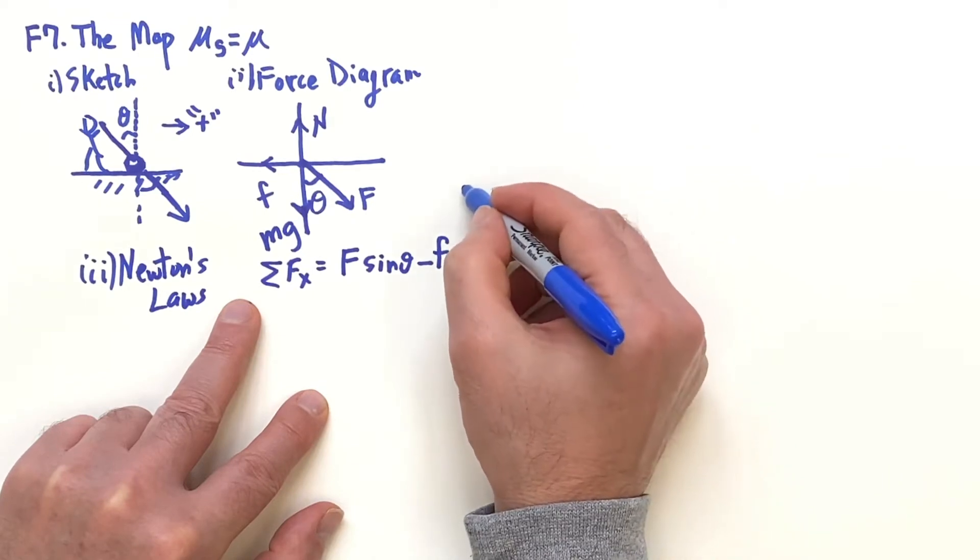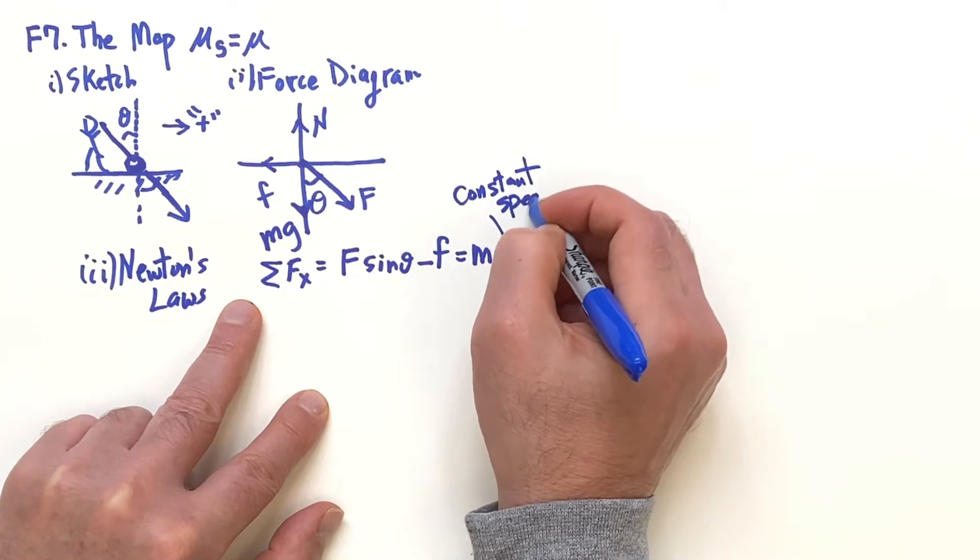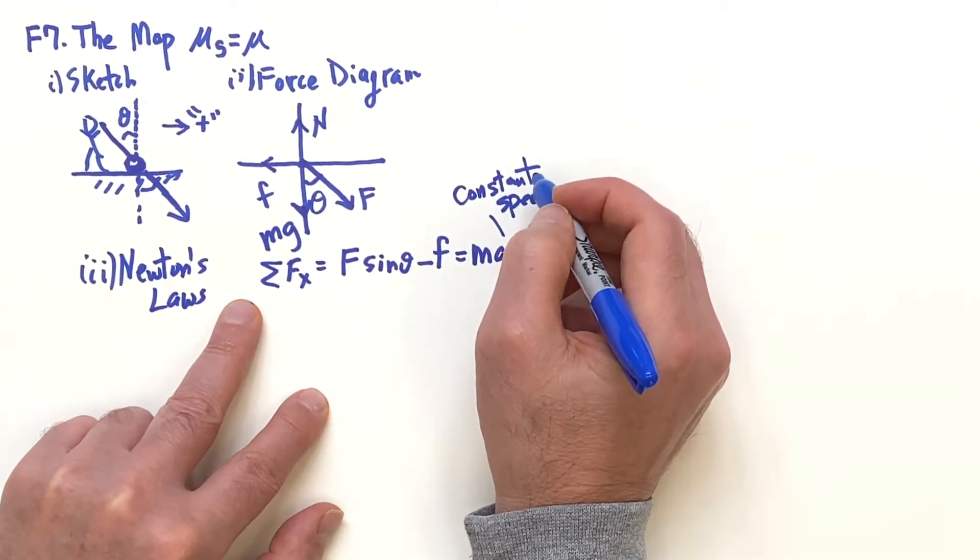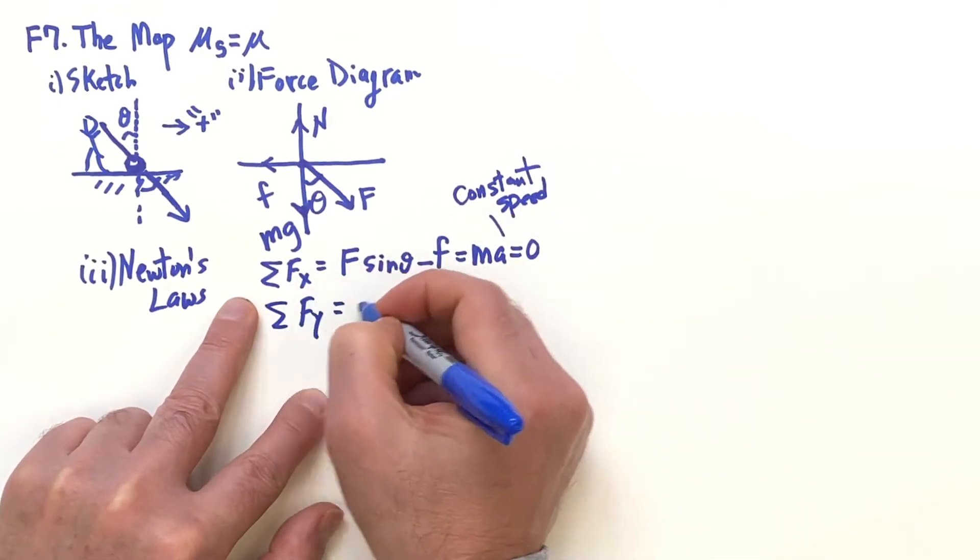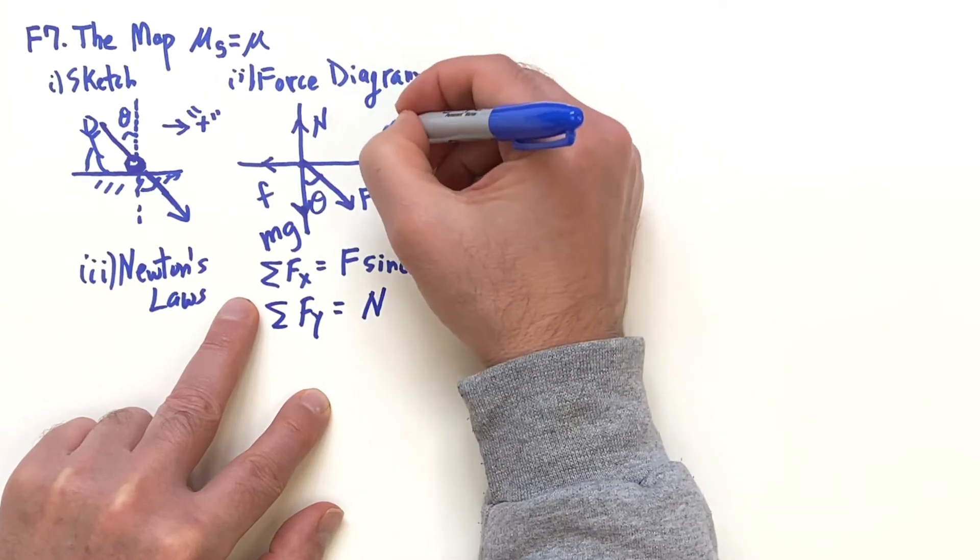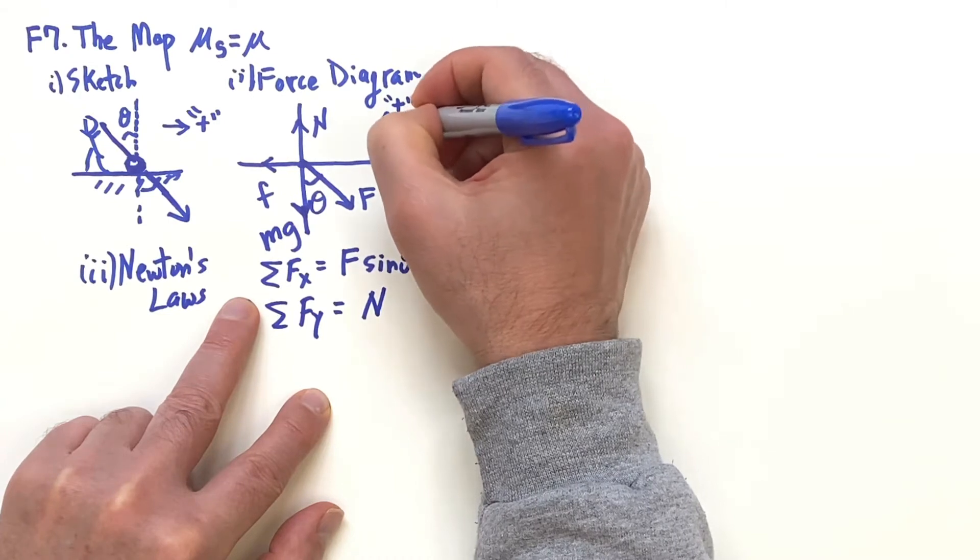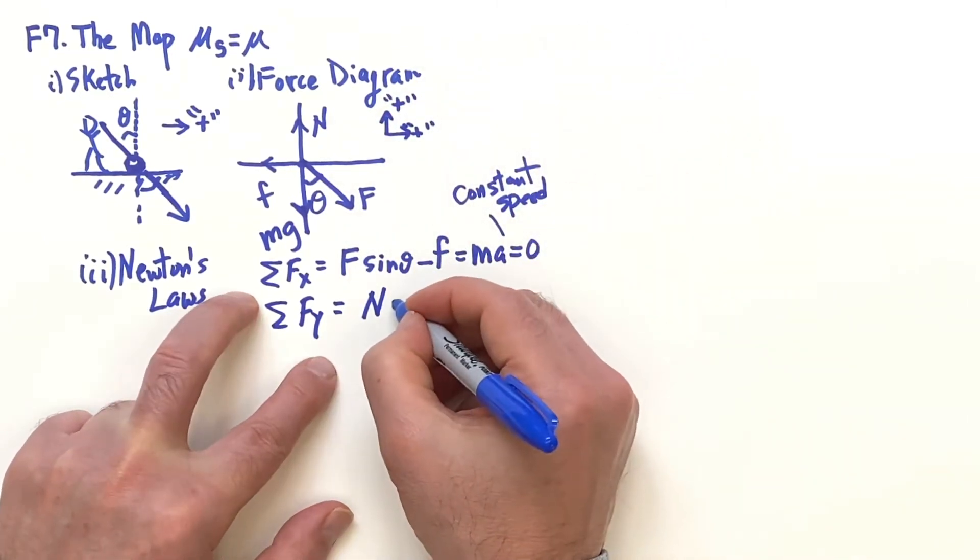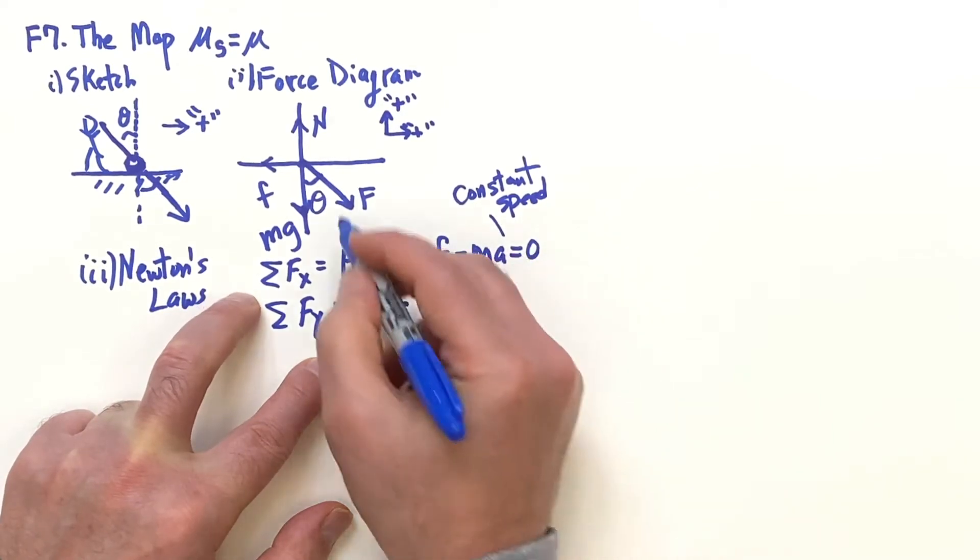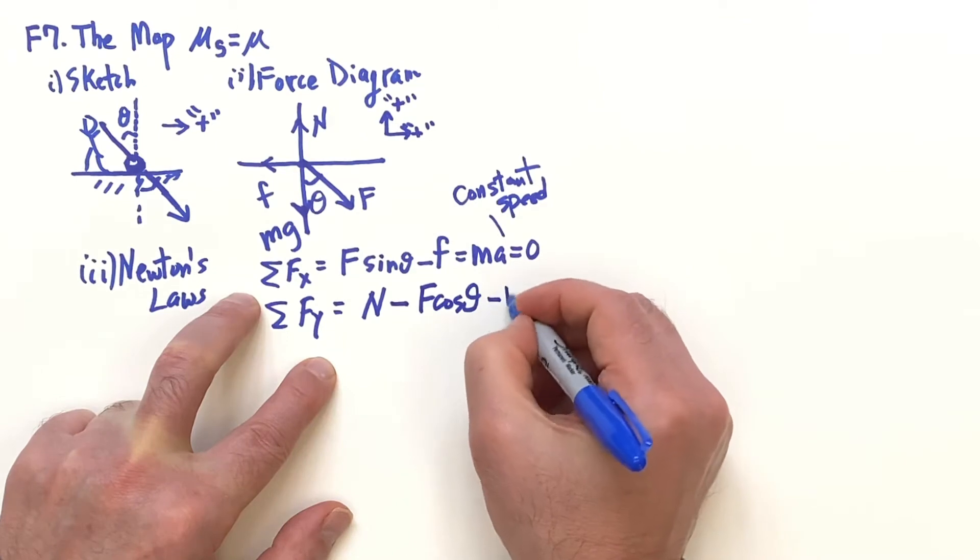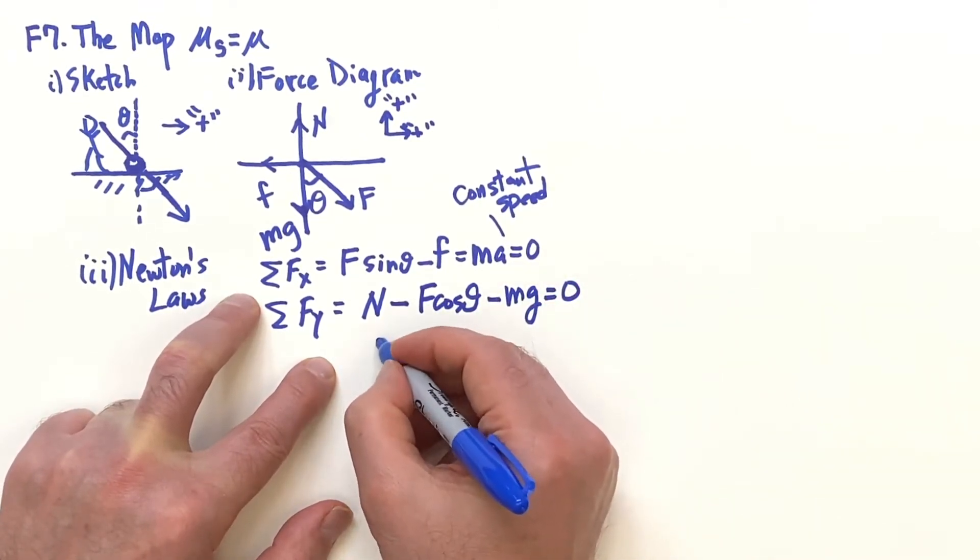Minus F_friction going back is ma, which is zero because we're going with constant speed. Then the sum of the forces in the y direction would be N going up minus F cos θ going down and then minus mg going down, and that's equal to zero. Then we have the auxiliary equation: the friction force is μ times N.